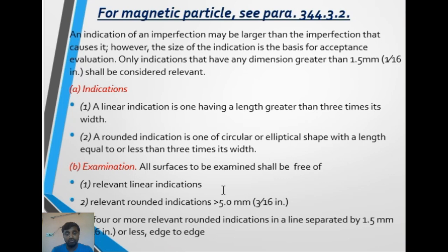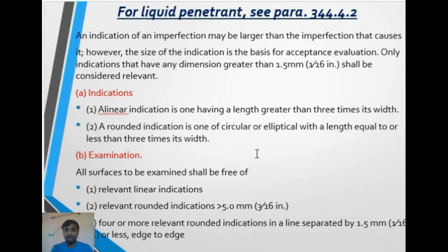For magnetic particle: a relevant rounded indication greater than 5 mm is not acceptable. Also, four or more relevant rounded indications in a line separated by less than 1.5 mm are not acceptable. For liquid penetrant (para 344.4.2), the definitions of linear and rounded indications are the same, and the acceptance criteria are identical: relevant linear indications are not acceptable; rounded indications greater than 5 mm are not acceptable; four or more in a line separated by less than 1.5 mm are not acceptable.